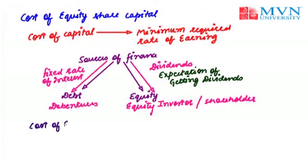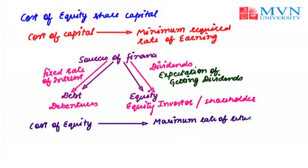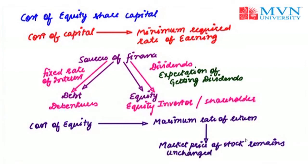The cost of equity is the minimum rate of return that the company must earn on the equity-financed portion of its investment so that the market price of the stock remains unchanged. The cost of equity is not the out-of-pocket cost of using equity capital, as equity shareholders are not paid dividends at a fixed rate every year, and payment of dividend is not legally binding. But this does not mean that equity share capital is cost-free, because equity shareholders invest money on the expectation of getting dividends, and the company must earn this minimum rate so that the market price of shares remains unchanged.